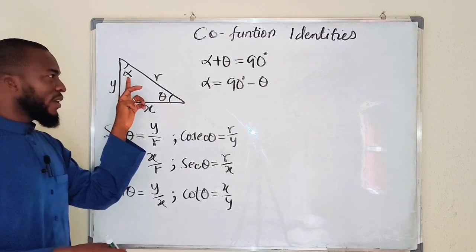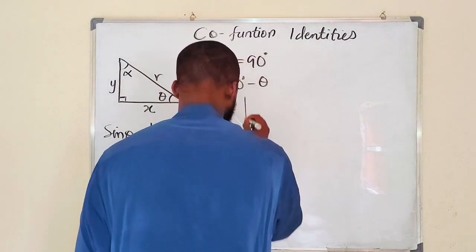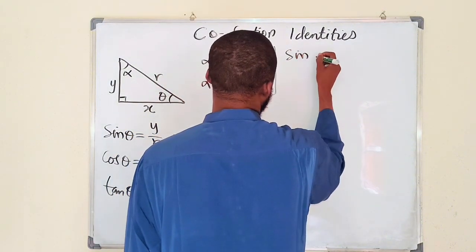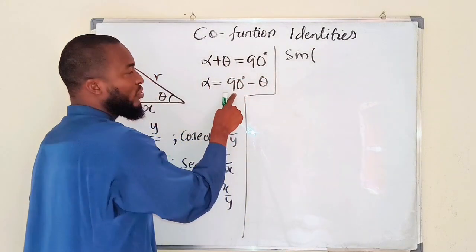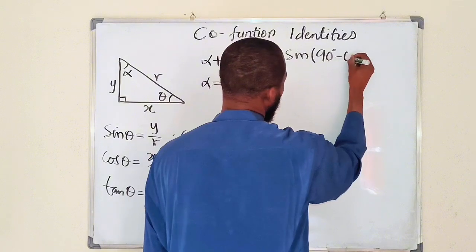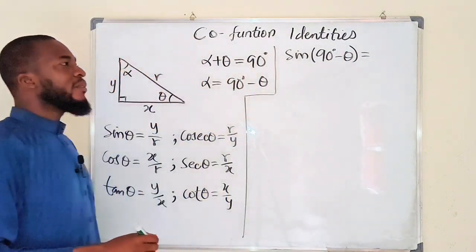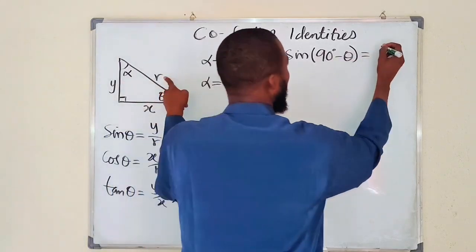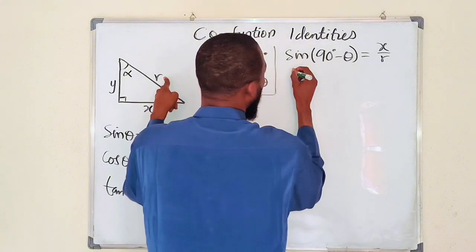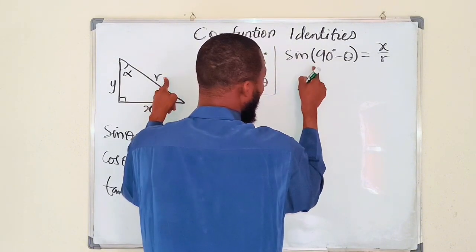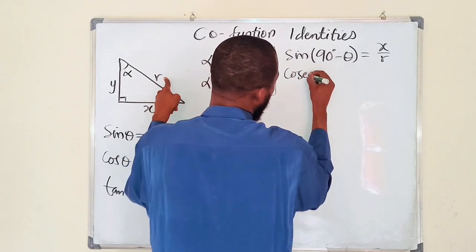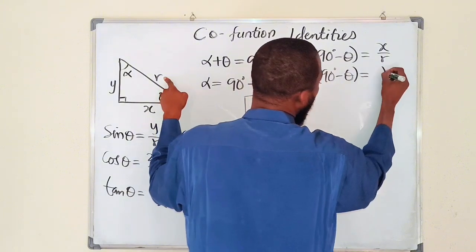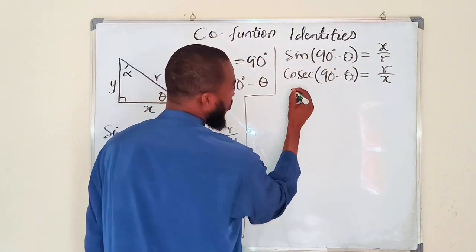Now I also need the trig ratios for angle alpha. Instead of alpha, we write 90 degrees minus theta. Sine of (90° - theta) equals opposite divided by hypotenuse, which is x divided by r. The reciprocal of this, cosecant of (90° - theta), equals r divided by x.